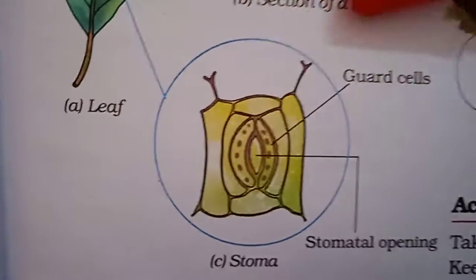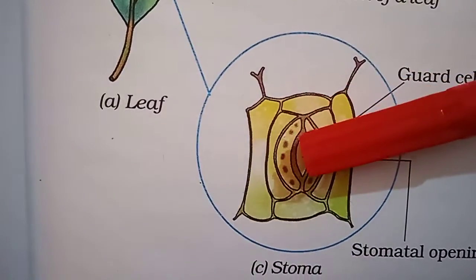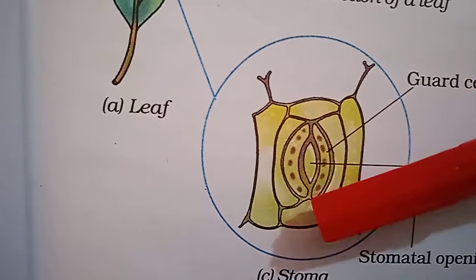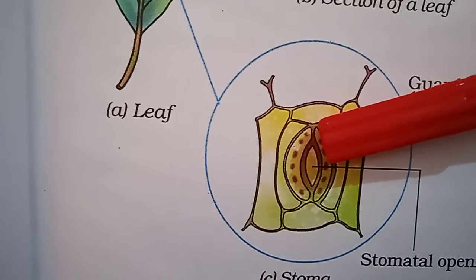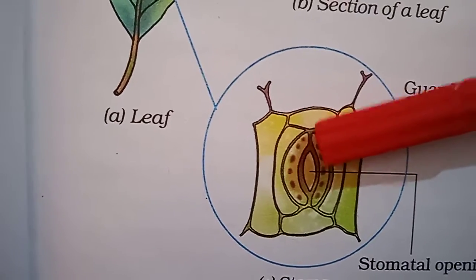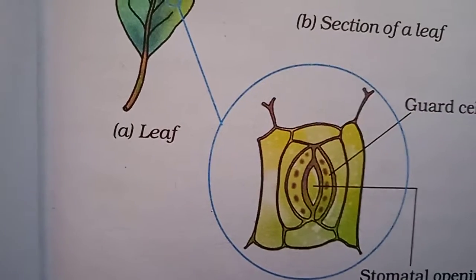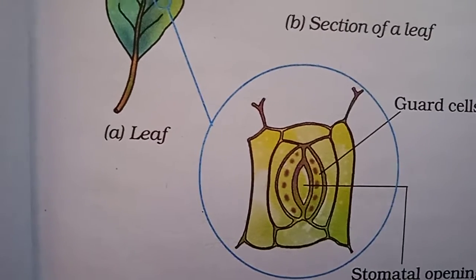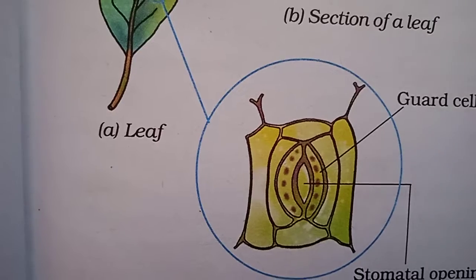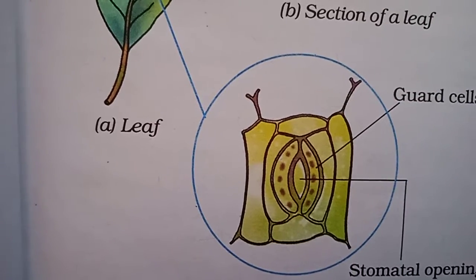See here that leaf, and this is the stomatal opening. By this only they can do the transpiration. That means they can give the excess water from this and they can absorb the carbon dioxide, everything by this opening of the stomata only.